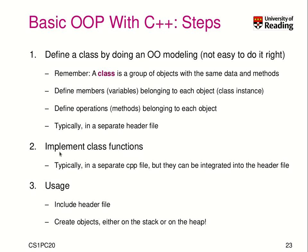Let's do a little bit of object-oriented programming with C++, first introducing the general high-level steps that need to be done. You should define a class by doing an object-oriented model. It's not easy to do it right — there are many variants of doing it, and you need some practice. But let's assume we are doing this.